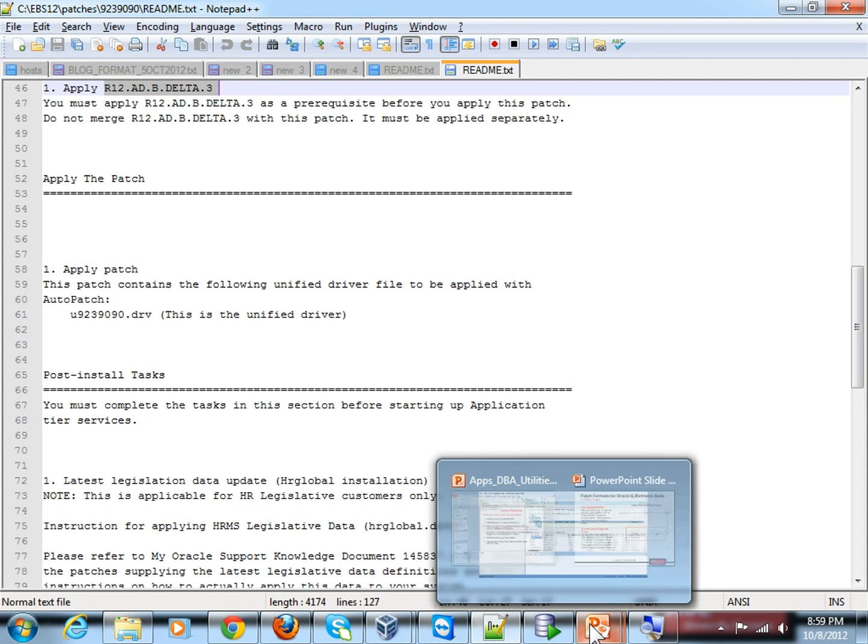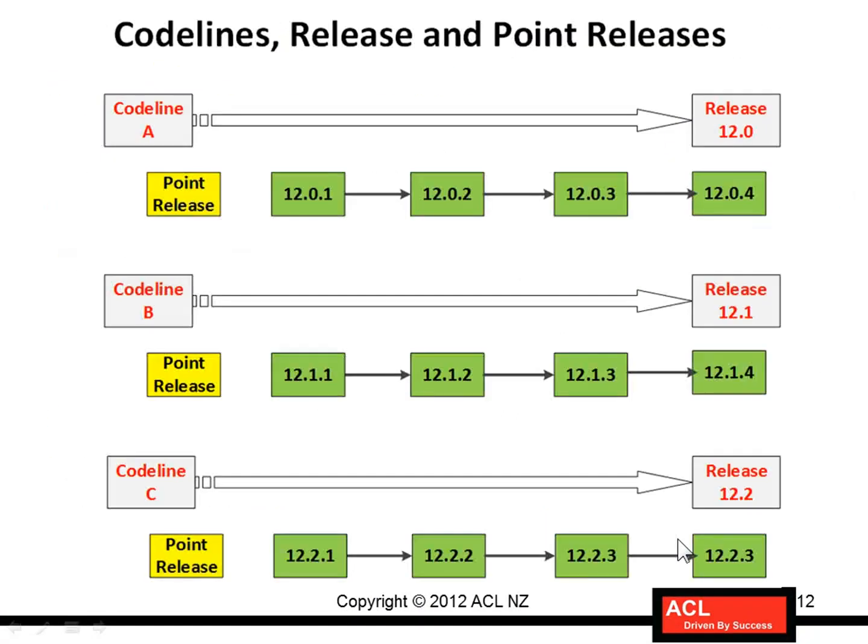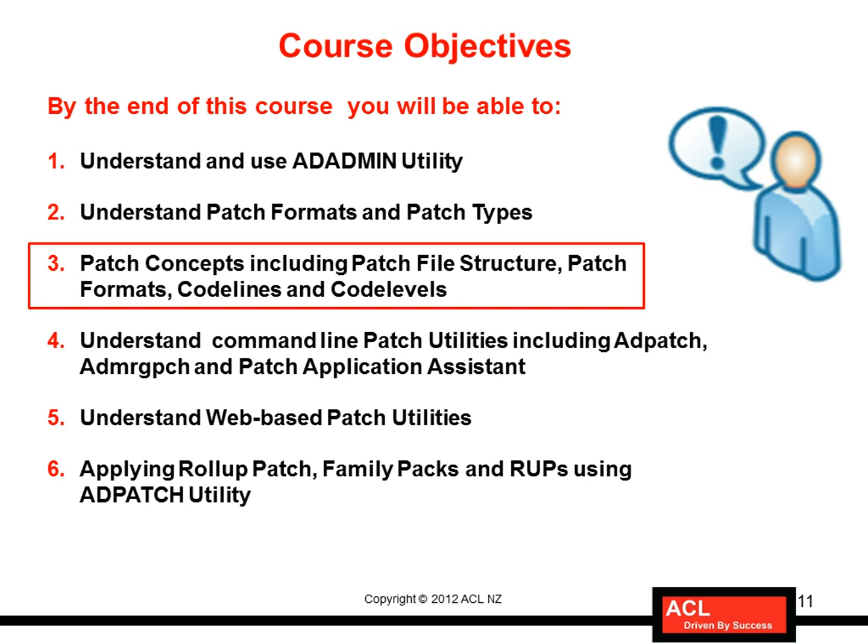So that was basically the patch file structure — containing all the directories for individual applications with the fixes, then the driver file, and third the readme file. Patch format was covered in the previous section. We also understood what code lines are: designators A, B, and C correspond to releases 12.0, 12.1, and 12.2 respectively. Now we need to understand code level.